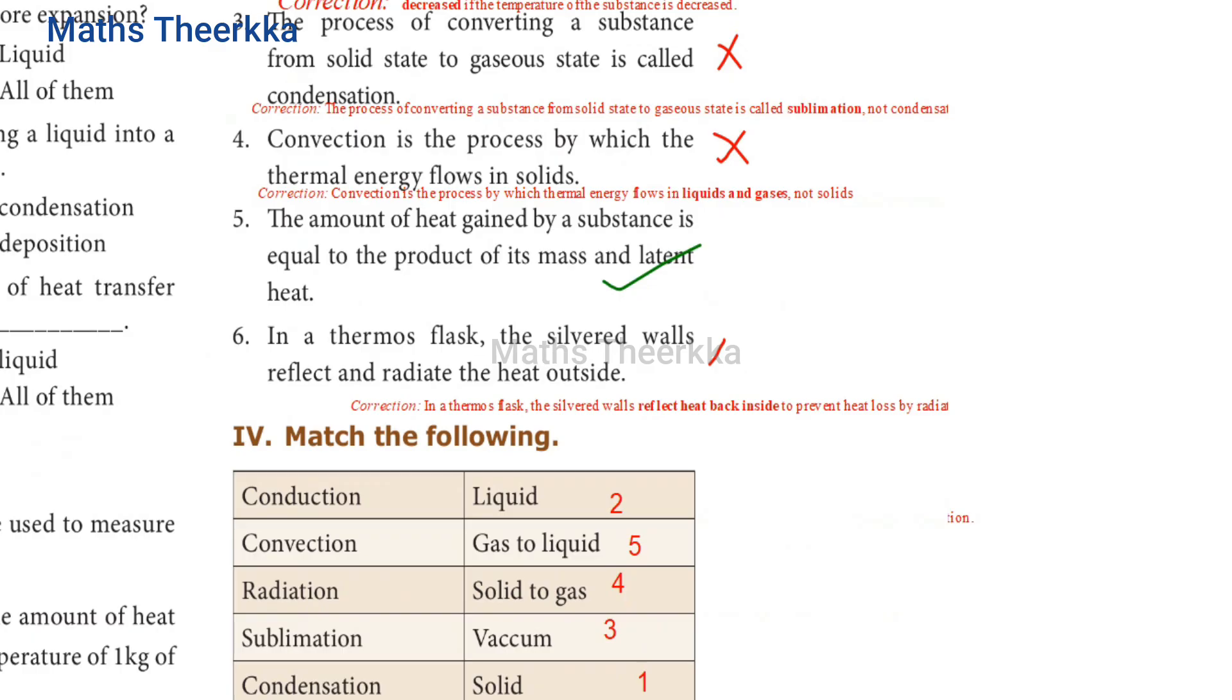Sixth one. In a thermos flask, the silvered walls reflect and radiate the heat outside. The answer is false because in a thermos flask, the silvered walls reflect heat back into inside to prevent heat loss by radiation. They do not radiate heat outside.